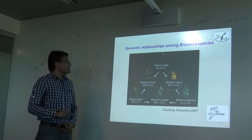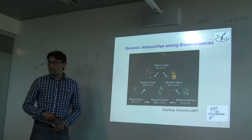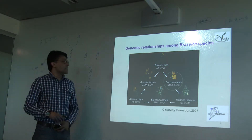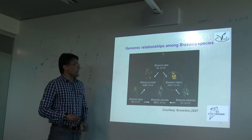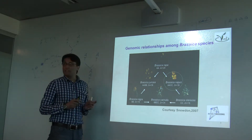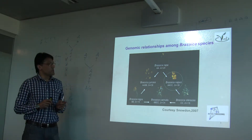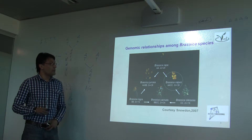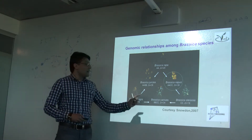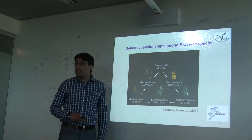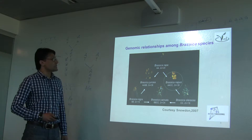Starting from Brassica napus — as Andrea already told us, Brassica napus is an amphi-diploid of Brassica rapa and Brassica oleracea. So we have 38 chromosomes in Brassica napus.